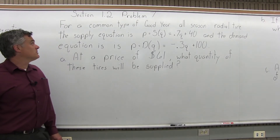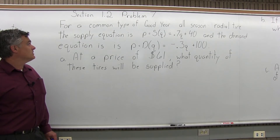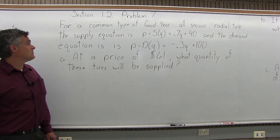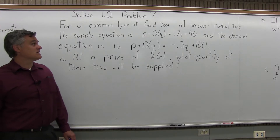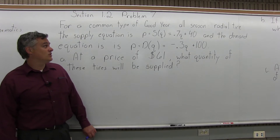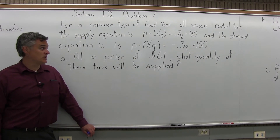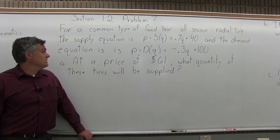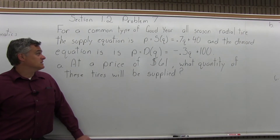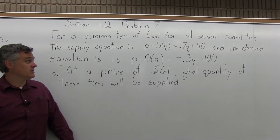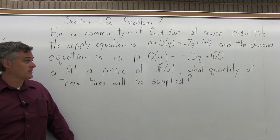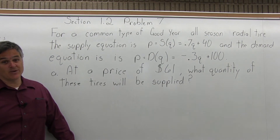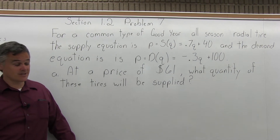This is problem number 7 from Section 1.2. It says for a common type of Goodyear all-season radial tire, the supply equation is P equals S(Q) equals 0.7Q plus 40, and the demand equation is P equals D(Q) equals negative 0.3Q plus 100. Based on this information, there are five separate questions that are asked.